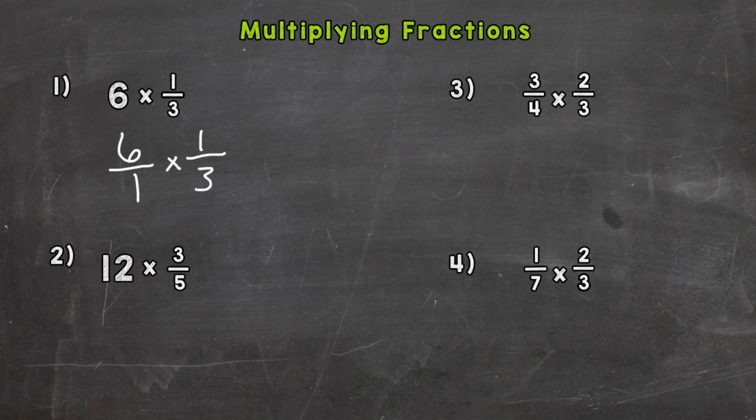Bring down the multiplication sign and the one-third. Now we multiply straight across. Numerator times numerator, denominator times denominator. So six times one is six. One times three is three.